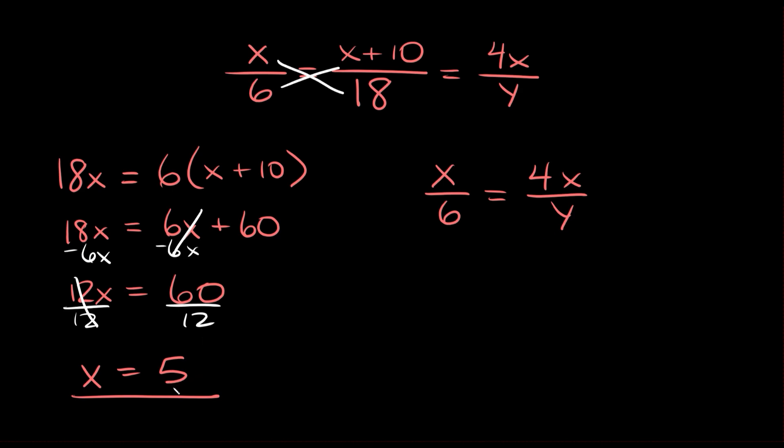But we know what x equals now. It's equal to 5. So we can plug in a 5 right here. And we can also plug in a 5 right here. So 4 times 5 equals 20. So we know that this numerator equals 20.